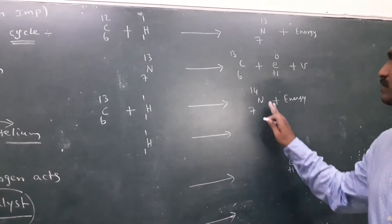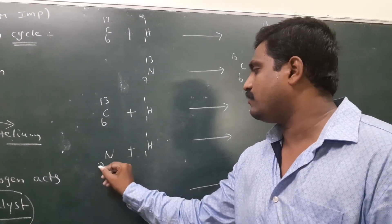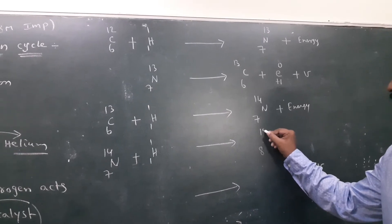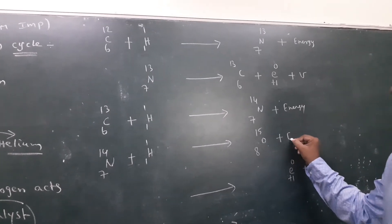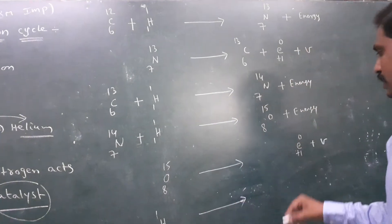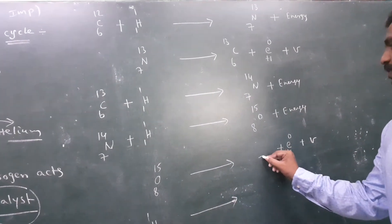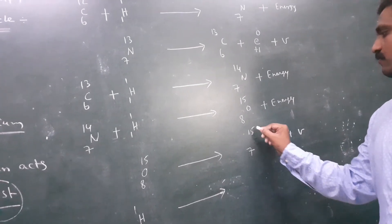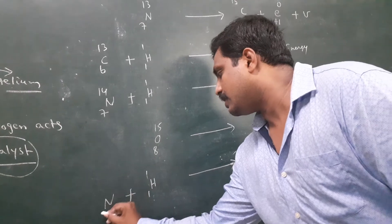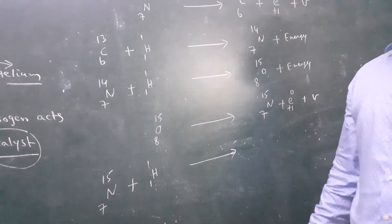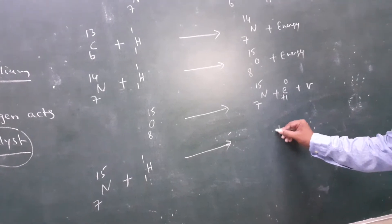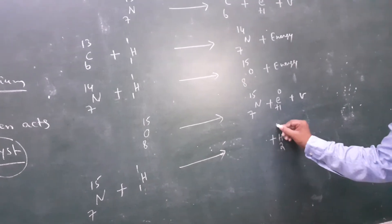Next, N-7-13 plus a proton: 7 plus 1 gives 8, 13 plus 1 gives 14, so we get N-7-14, plus energy. Then N-7-14 plus a proton: 7 plus 1 gives 8, 14 plus 1 gives 15, so we write O-8-15, plus energy. Continuing, O-8-15 gives N-7-15. Finally, in the Carbon-Nitrogen cycle, Hydrogen will be converted into Helium.